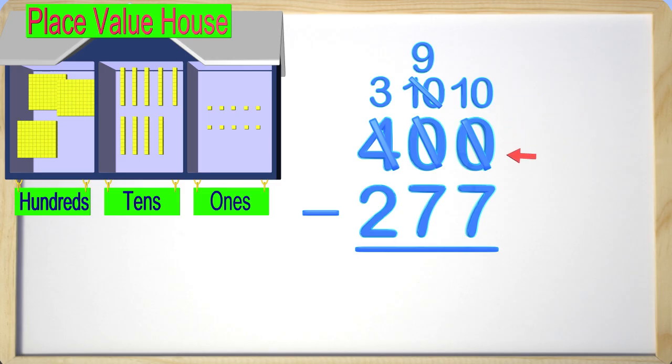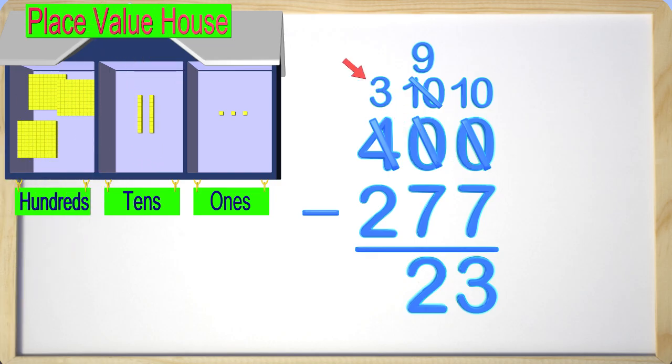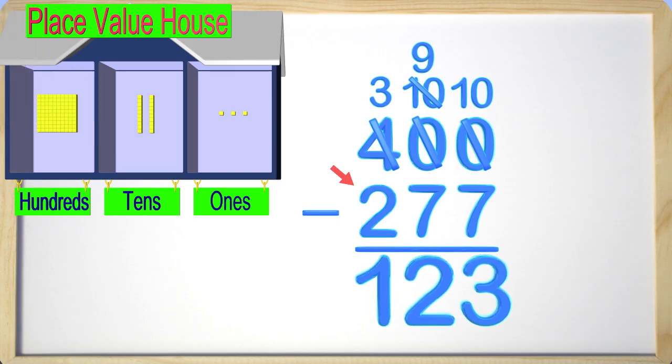Now we have ten subtract seven, which gives us three. On to the tens place, we have nine subtract seven, which gives us two. In the hundreds place, we have three subtract two, which gives us one. The answer is one hundred twenty-three. That was so cool! Awesome job!